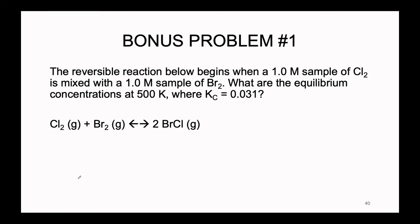Welcome to the bonus video for solving ICE table types of problems — how do we work with the balance between initial conditions, equilibrium constants, and equilibrium conditions? We're going to work through two bonus problems. The first problem involves a reversible reaction where chlorine is reacting with bromine reversibly to create two BrCl. We have a one molar sample of Cl2 being mixed with a one molar sample of Br2. What are the equilibrium concentrations at 500 K where Kc = 0.031?